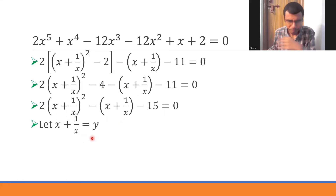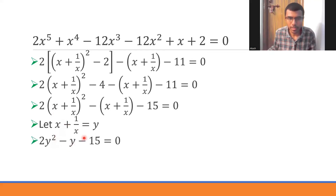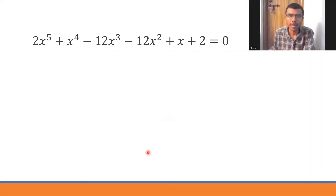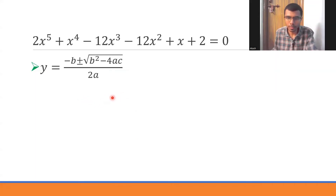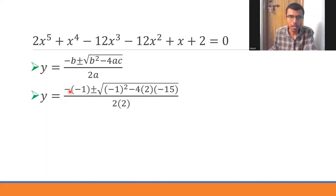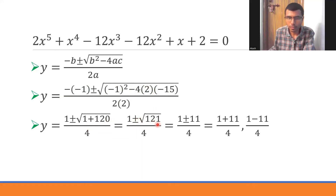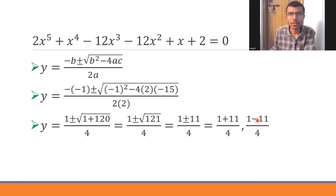Let y = x + 1/x. The equation becomes 2y² - y - 15 = 0. Using the quadratic formula with a=2, b=-1, c=-15: y = [1 ± √(1 + 120)] / 4 = [1 ± √121] / 4 = [1 ± 11] / 4. This gives y = 12/4 = 3 or y = -10/4 = -5/2.